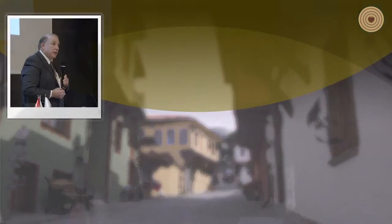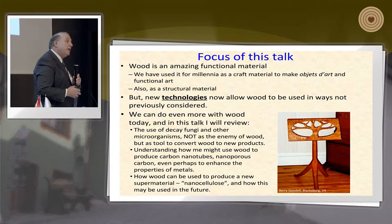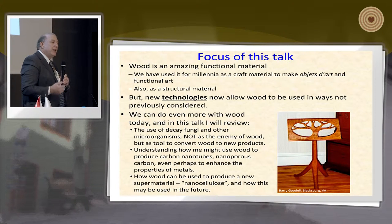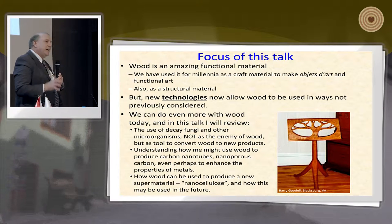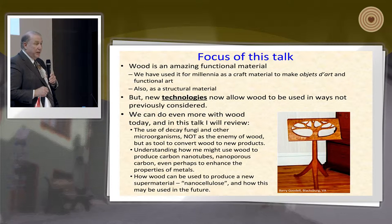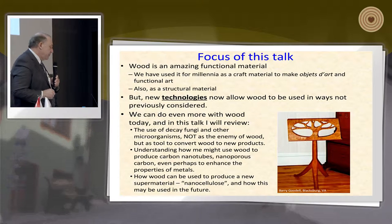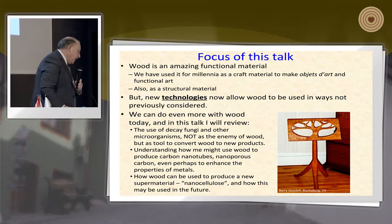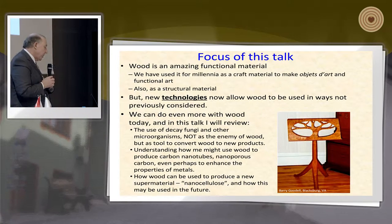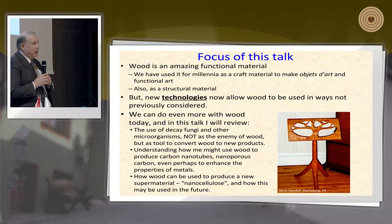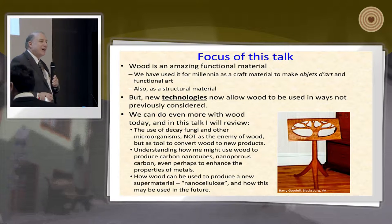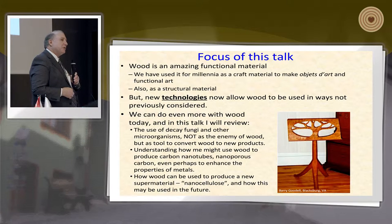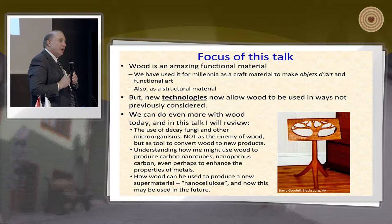One of the things we might be able to do from the biological perspective is to use decayed fungi and microorganisms — not as the enemy of wood as we typically think of them, but as ways to convert wood to new products. I also want to talk about using wood as a carbon material. We've carbonized wood for millions of years, and carbonization is one of the first things we did with wood, but now we understand how to carbonize wood and create new materials from it.